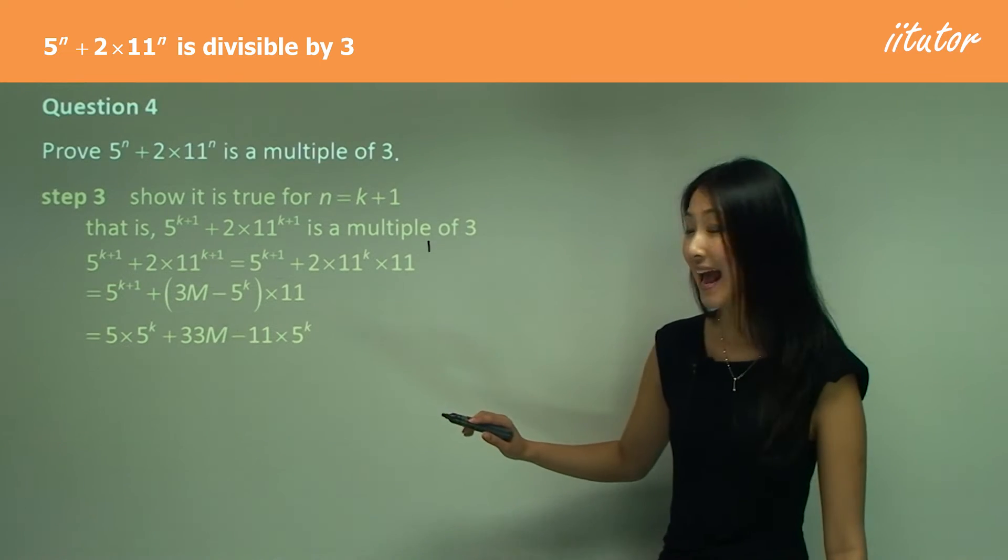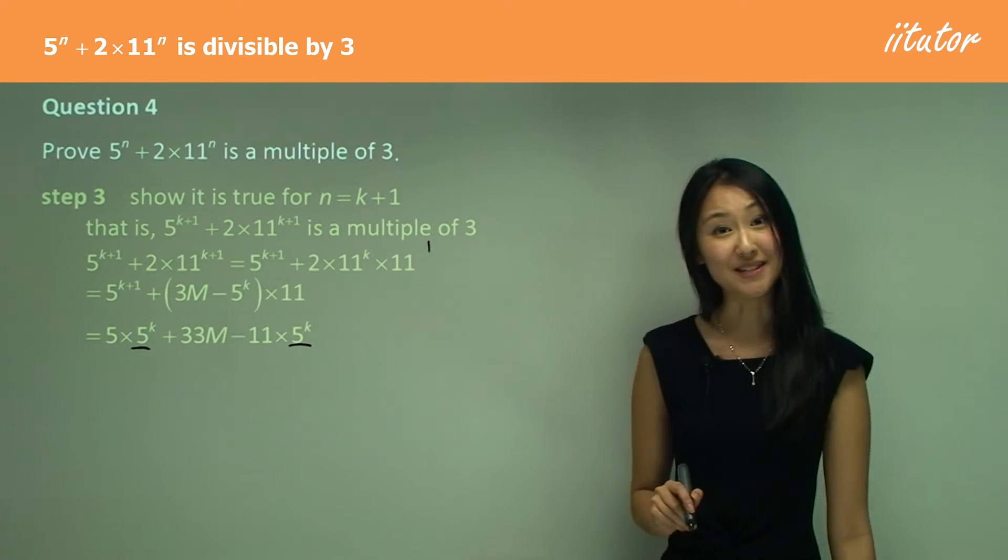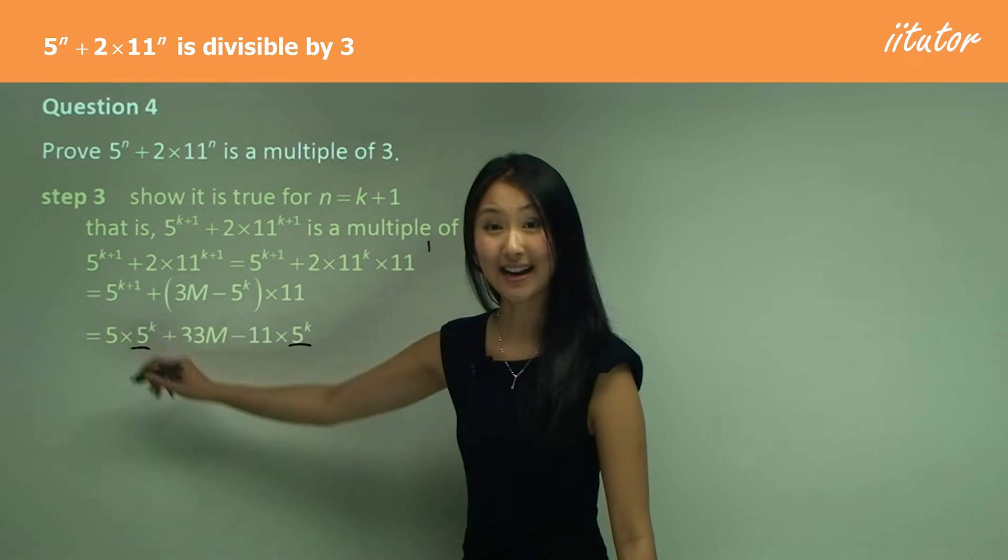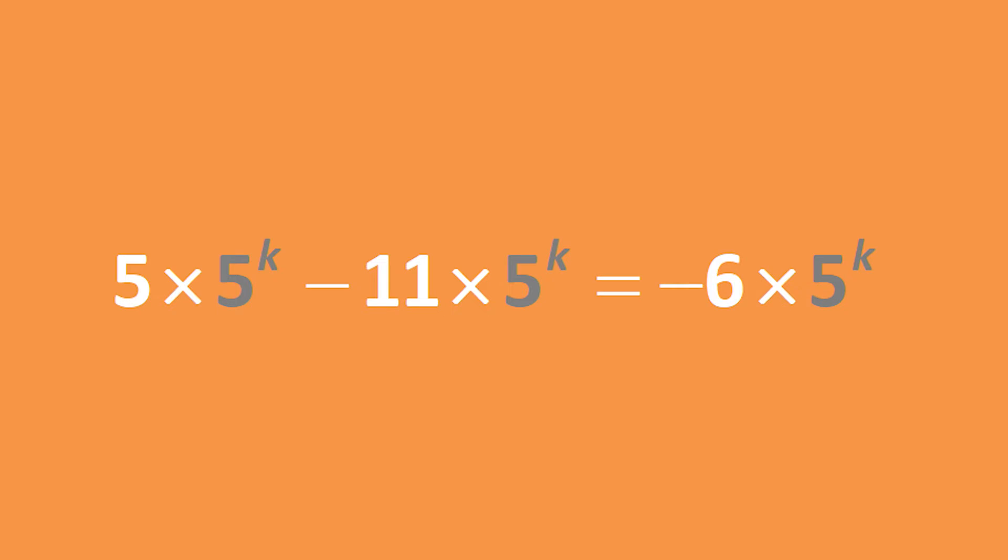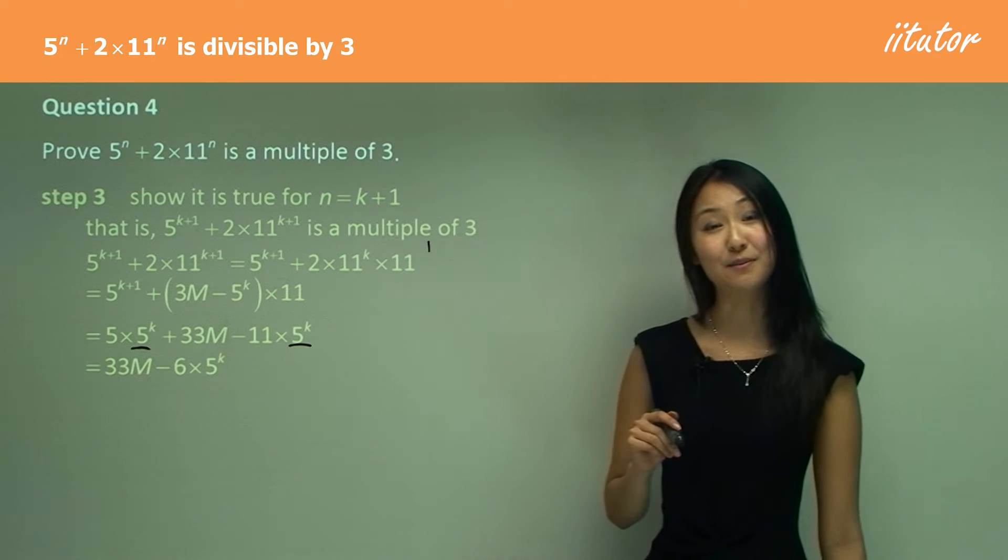So you can see now this and this, they're common terms, which means that we can just add that together. So now we have 33m minus 11 plus five just gives you minus six times five to the power of k.